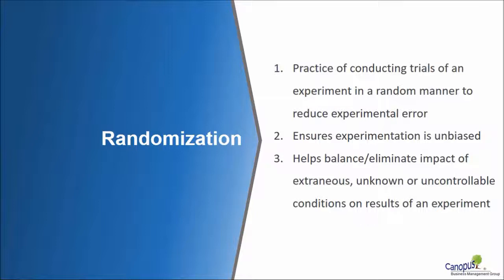The practice of conducting trials of an experiment in a random order is mainly to reduce the experimental error. And that is why we have what we call as the standard order and the run order. We can choose to randomize the runs, and the moment we randomize the runs, the standard order and the run order would not be the same. The standard order would get randomized and thus we have to stick to the run order.